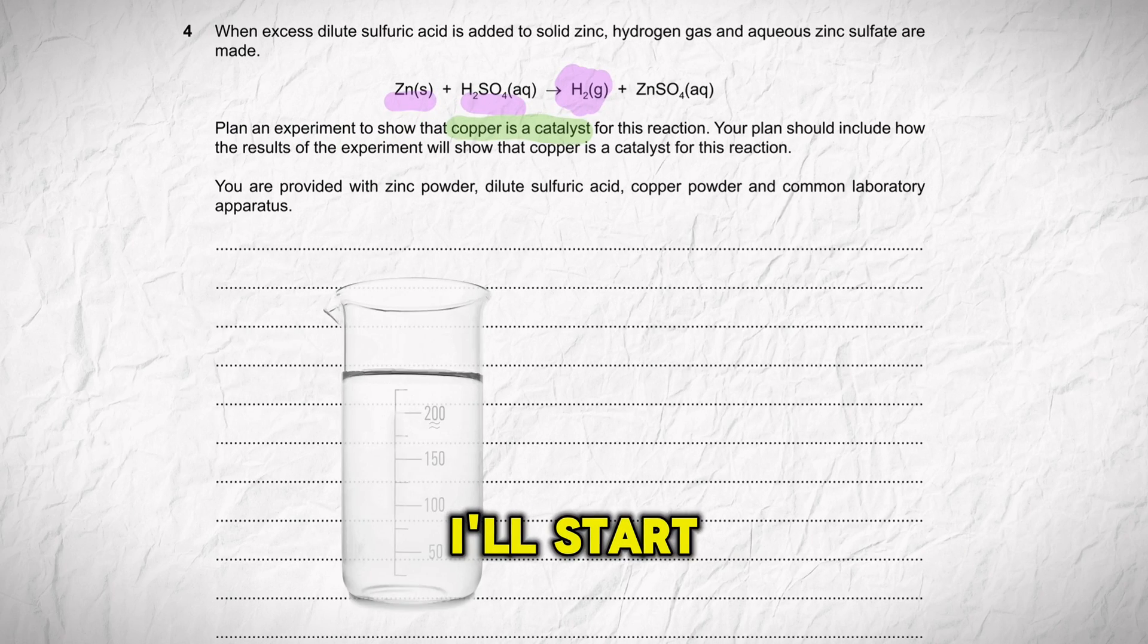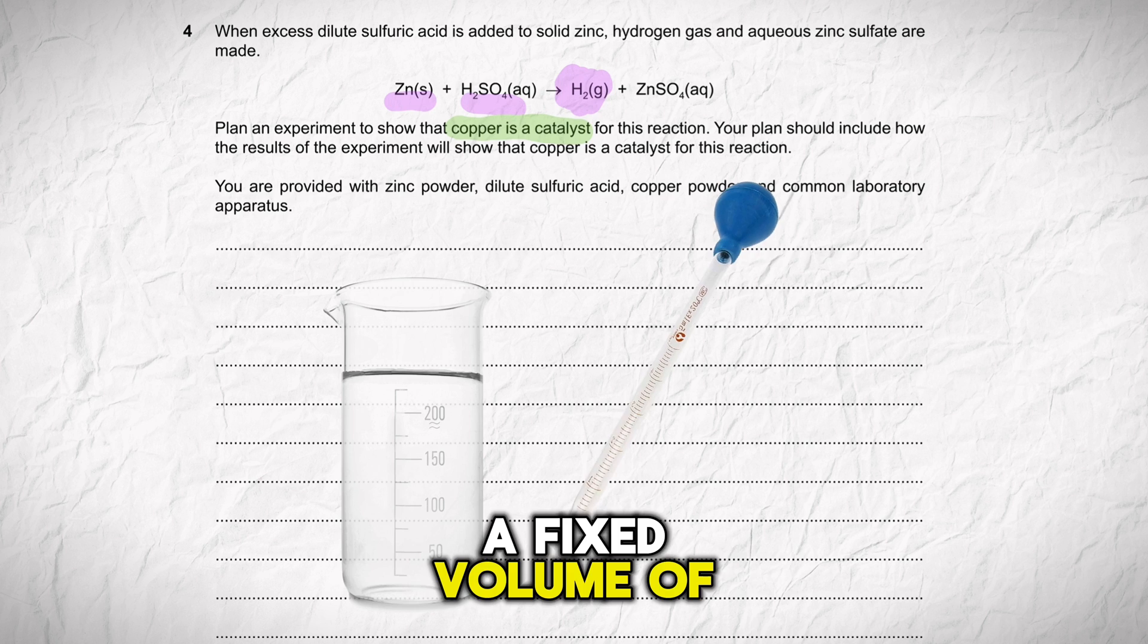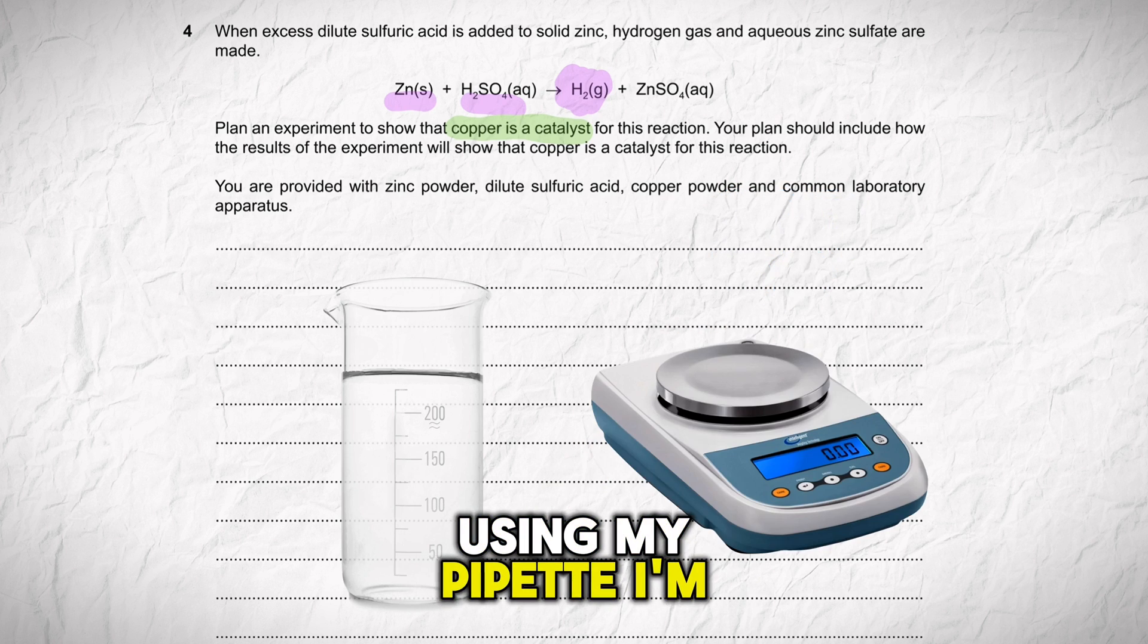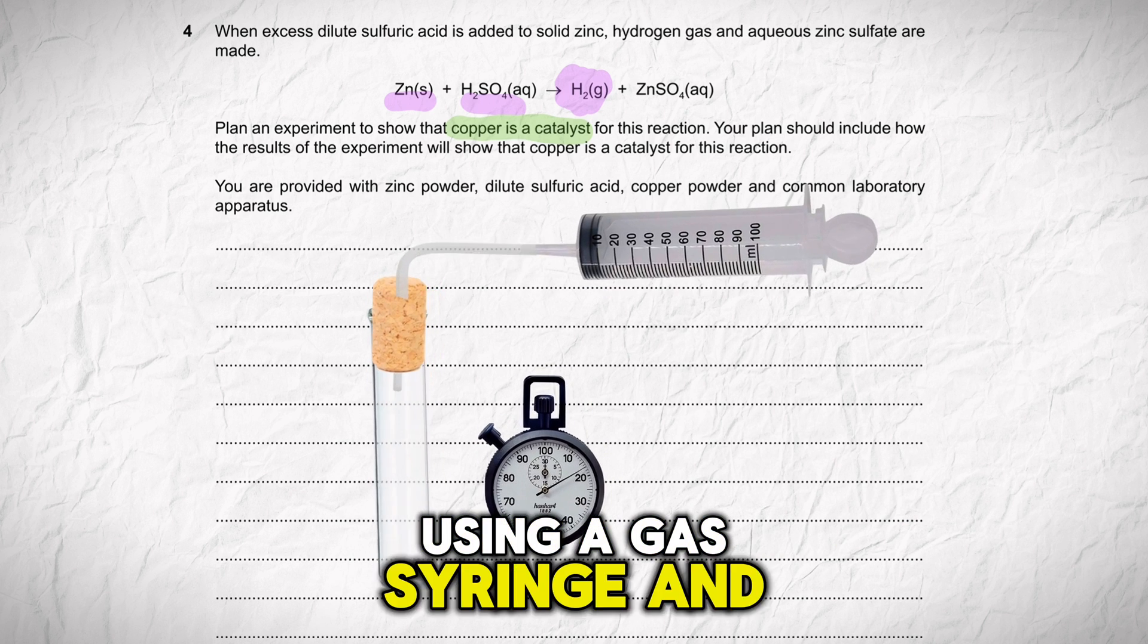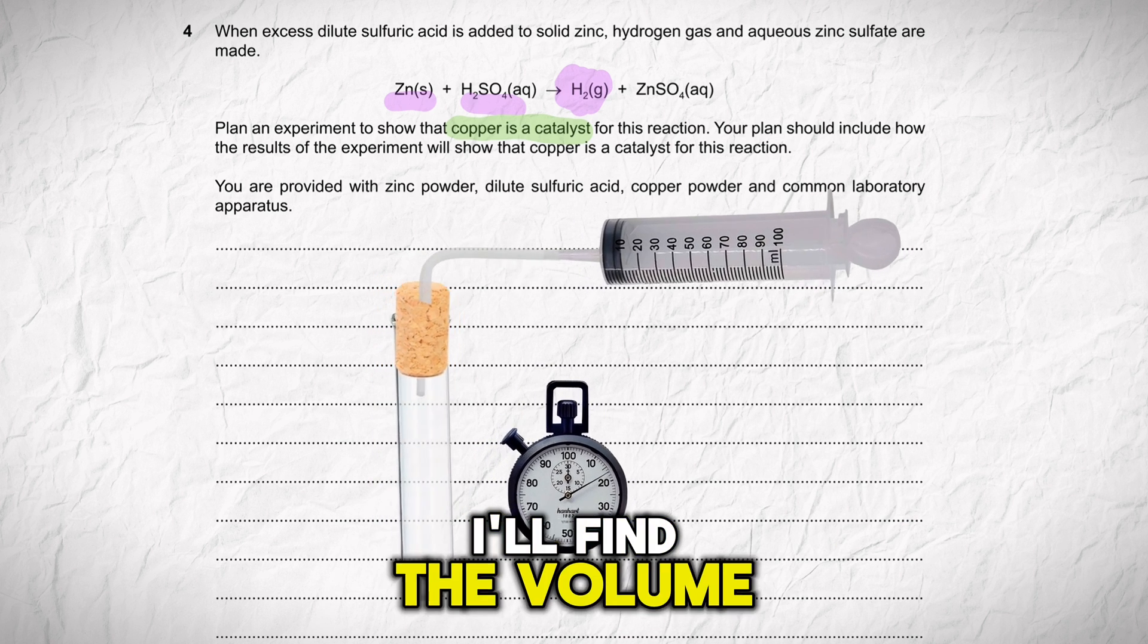I'll start by measuring a fixed volume of sulfuric acid using a pipette. I'm going to mix the sulfuric acid with a measured mass of zinc powder. Using a gas syringe and a stopwatch, I'll find the volume of hydrogen produced per minute.